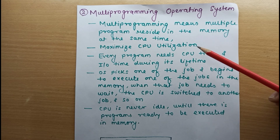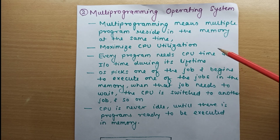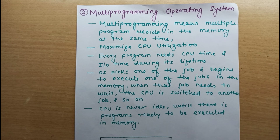Every program during its lifetime needs two types of time: CPU time, when it executes on the CPU, and IO time, when it performs some IO operation. Whenever a process executing on the CPU goes for an IO operation, the CPU will pick another job from the memory which is ready to be executed, so idle time can be reduced and CPU utilization can be increased.